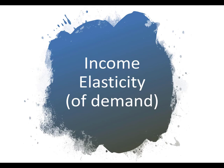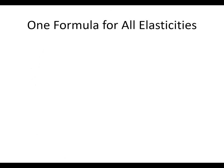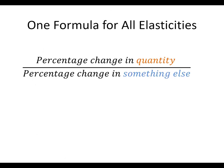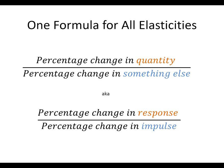What some people call income elasticity, I'm going to call income elasticity of demand, because then we can follow our formula that applies to every elasticity. We have a percentage change in quantity divided by a percentage change in something else. The name of the elasticity tells us what we put in for the quantity and what we put in for the something else. This is the same setup — the impulse is the thing causing us to change our behavior, and the response is what we do because of that impulse.